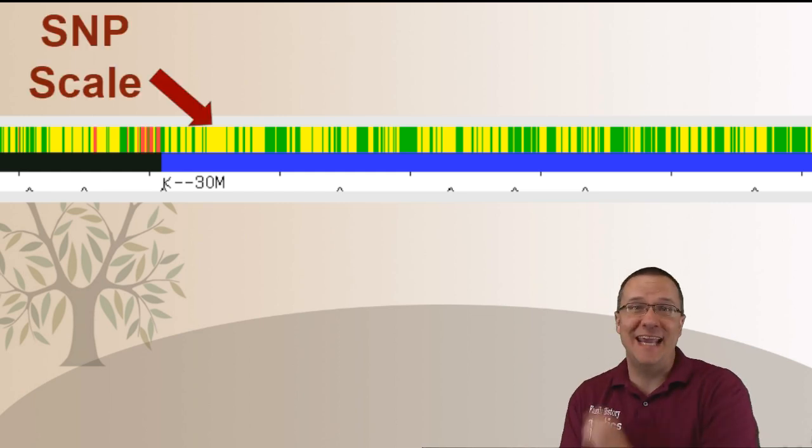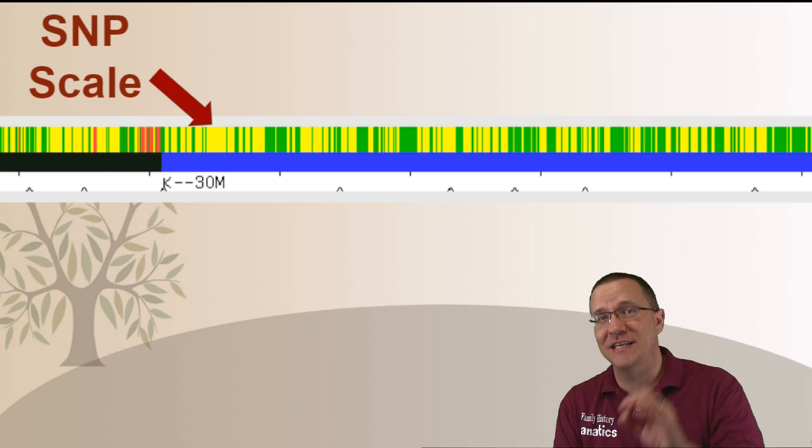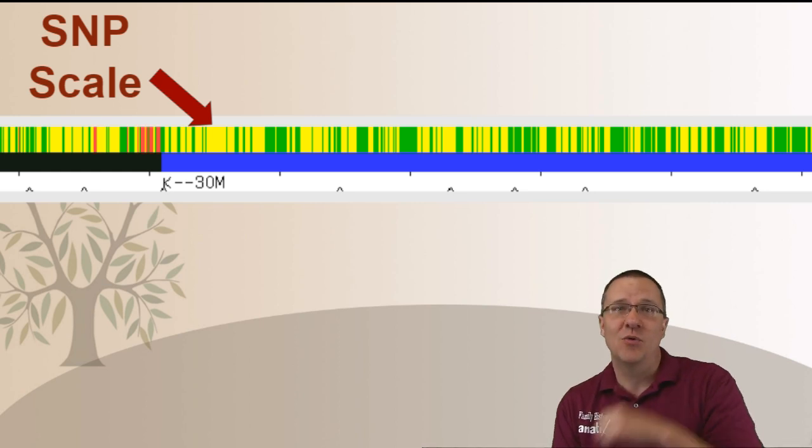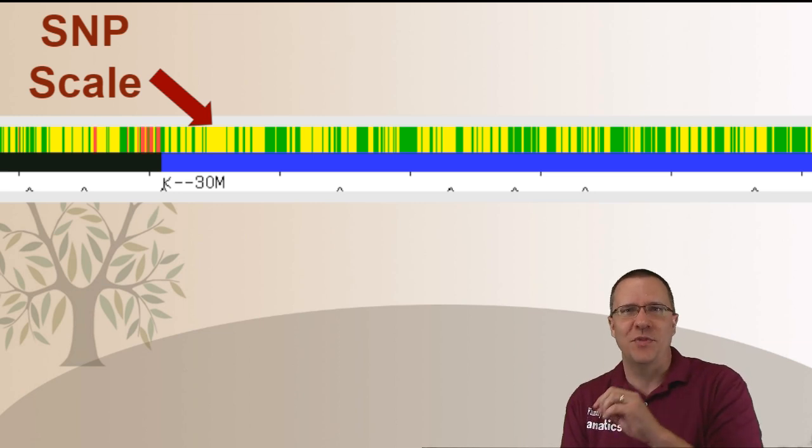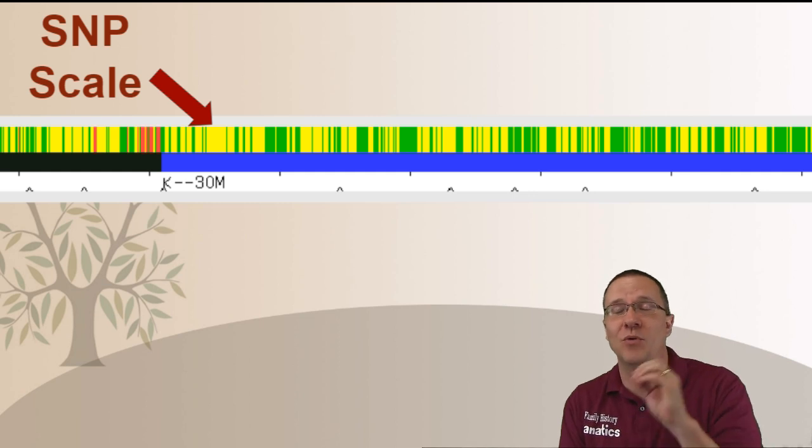Well the SNP scale is the easiest to see on here because actually it is every single pixel represents a single SNP. Most of the time. So each one of these bars along here represents a SNP that we either share completely in common or we just share half in common or in the case of red we don't share in common at all.